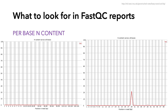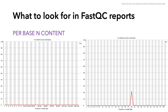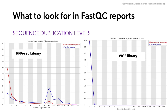The per base N content, where N stands for no base call, is a pretty simple plot. You should have a flat line, like what you see here. If you see any spikes above zero, this indicates instrument error during sequencing.